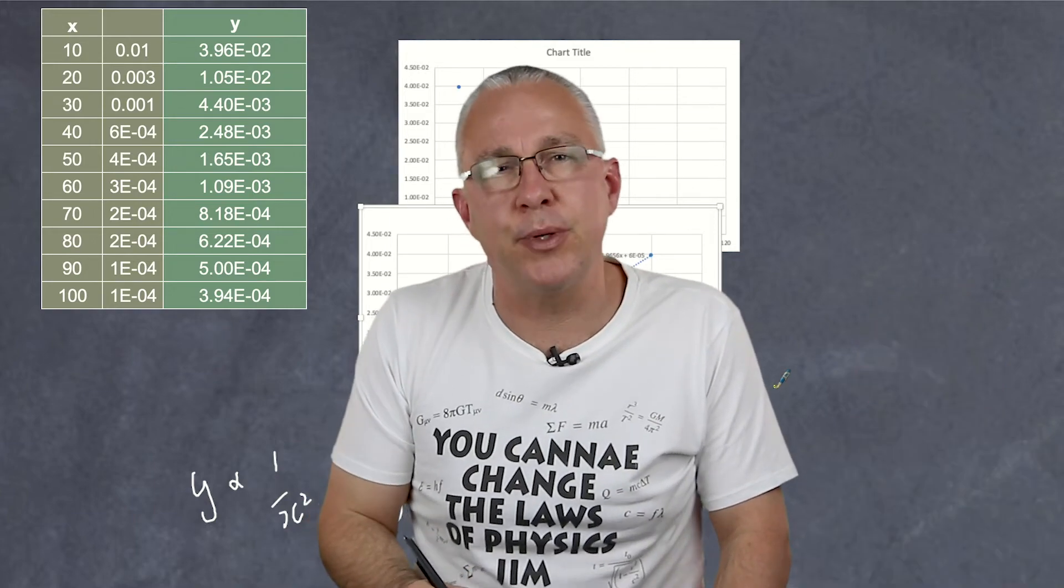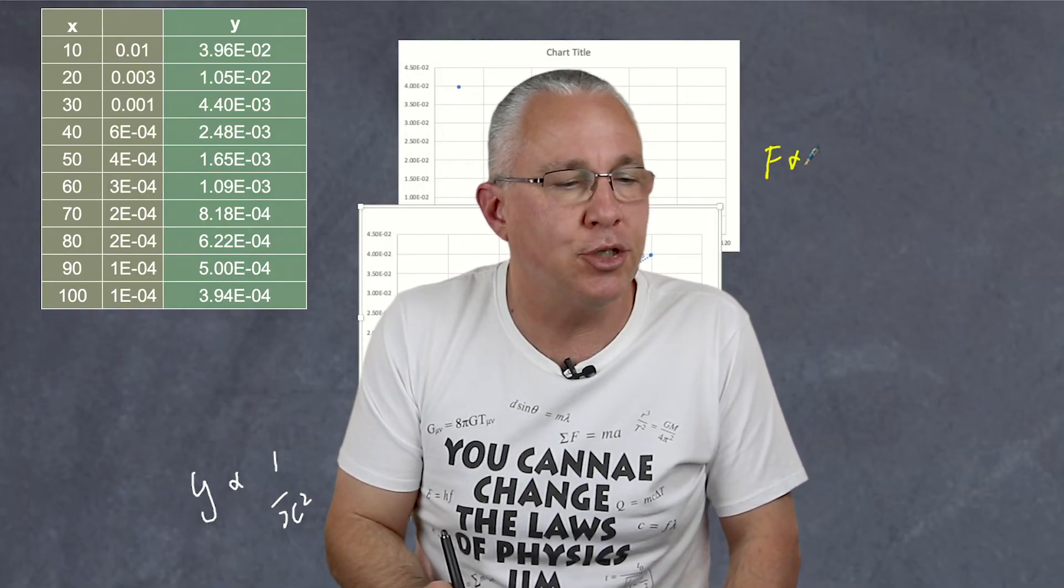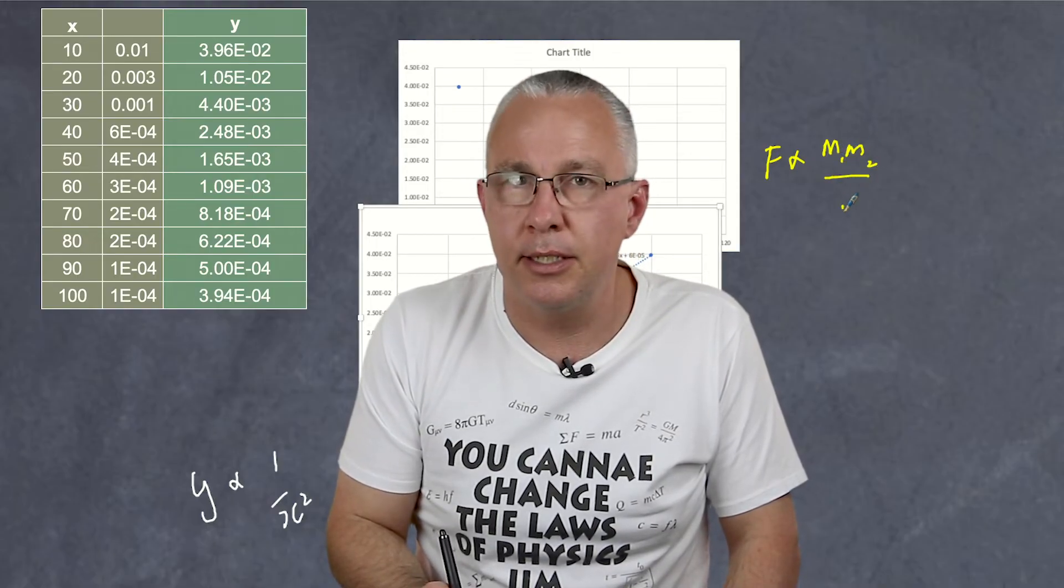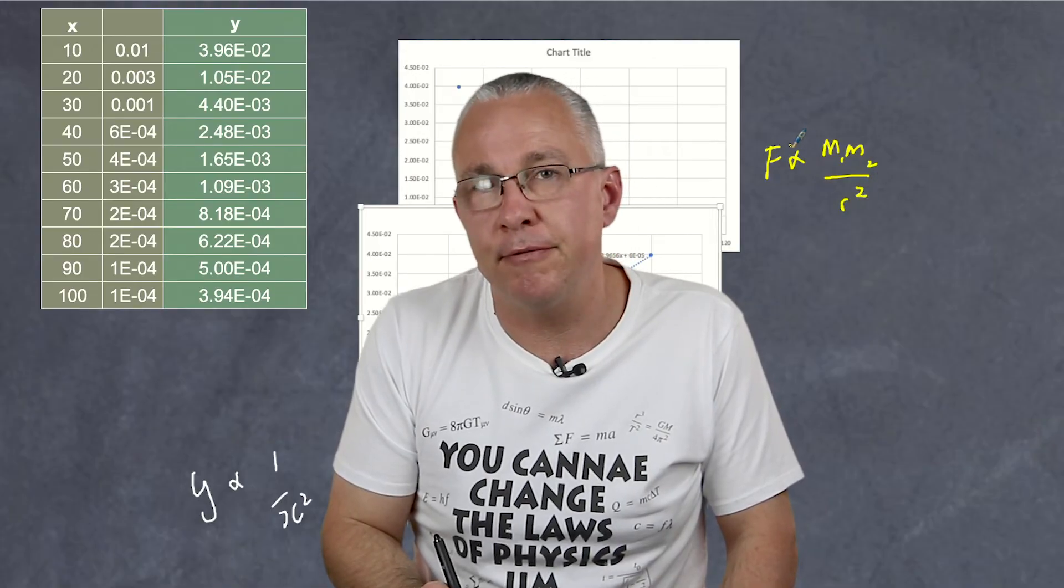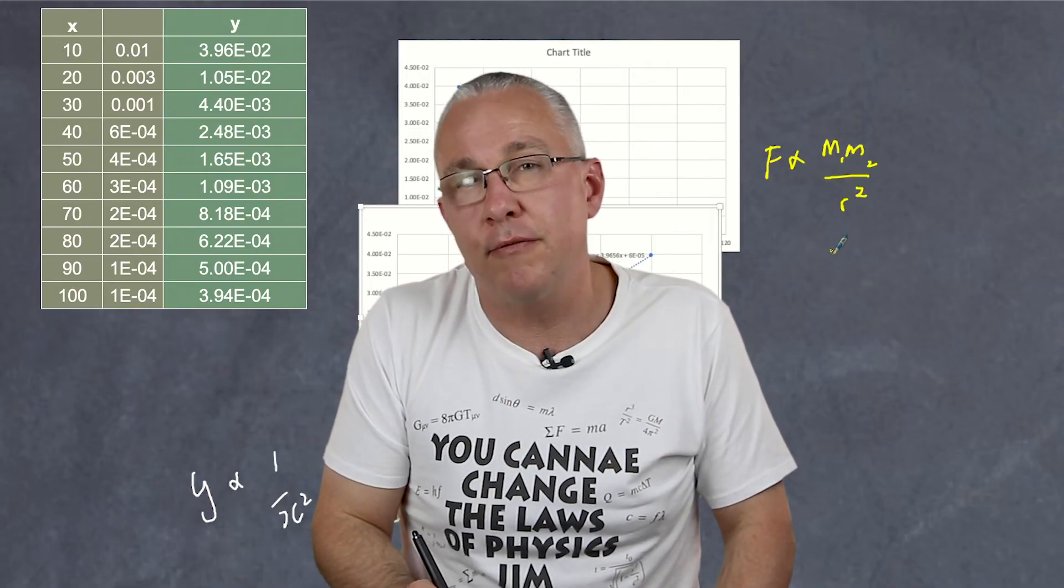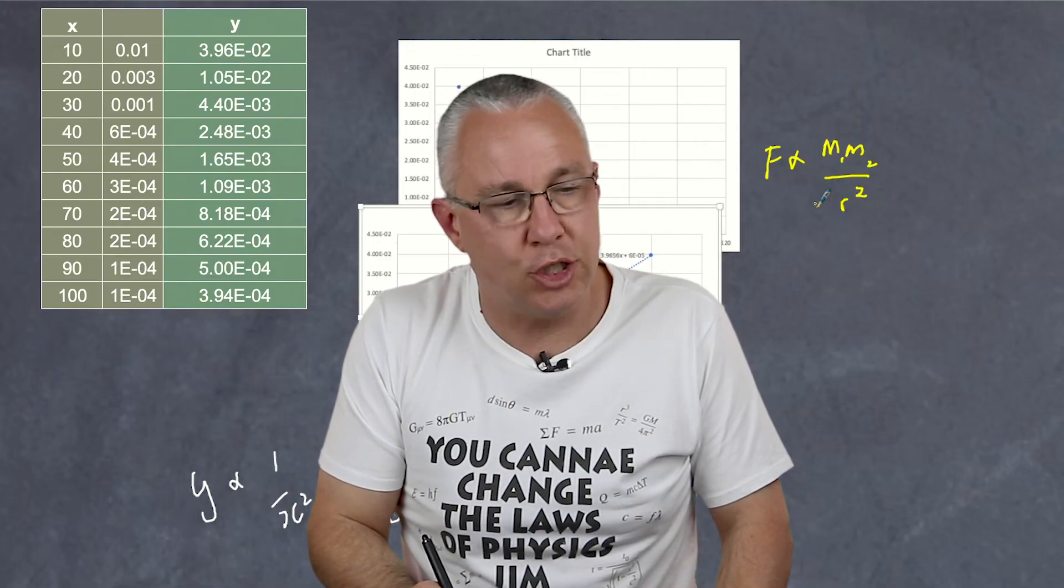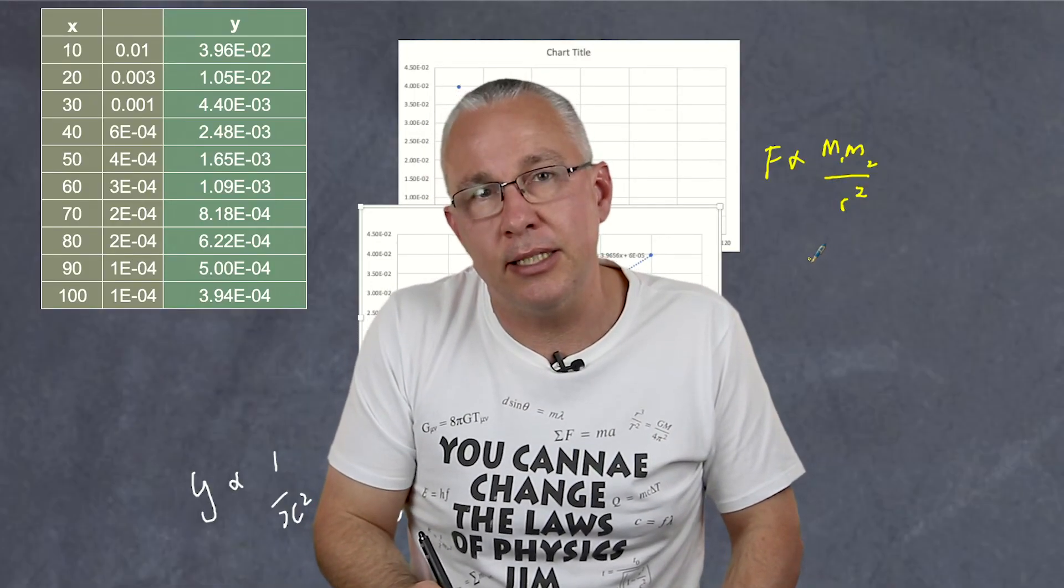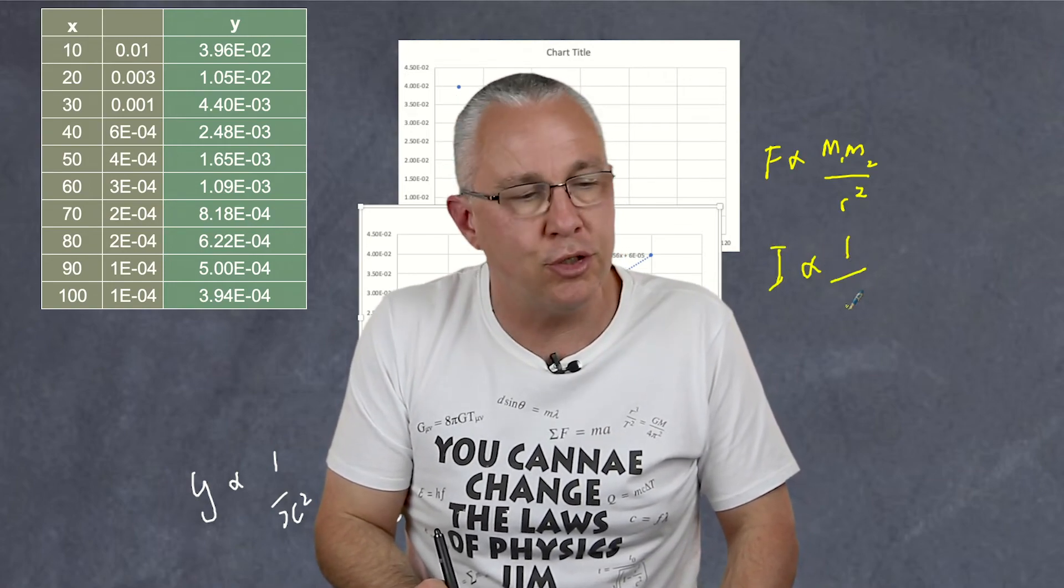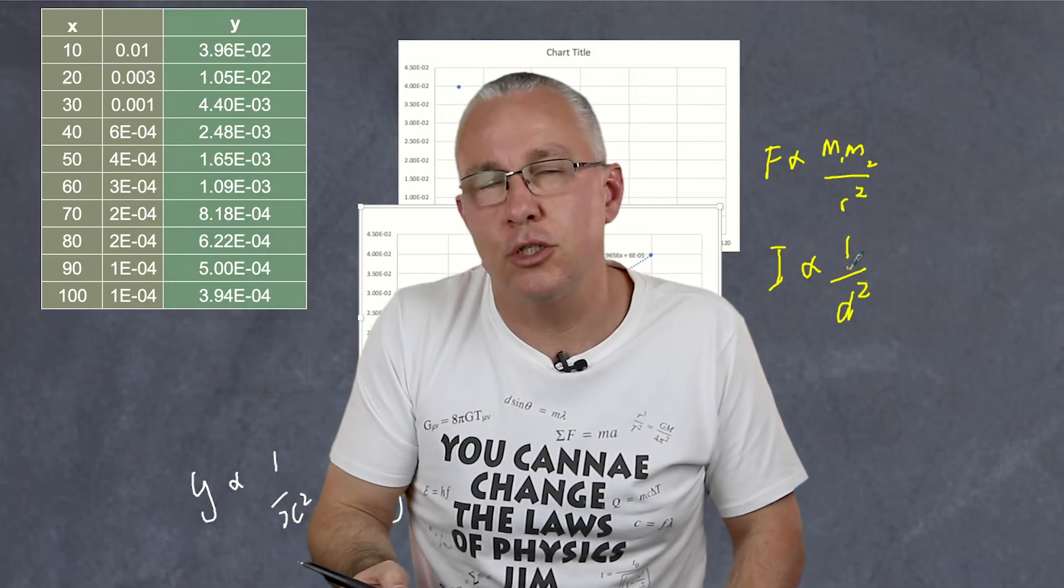So what's our example of an inverse square relationship? Well there's lots. The law of gravitation says that F is proportional to the product of the two masses divided by the distance between them squared. So F the gravitational force is proportional to the inverse of the square of the distance between them. Coulomb's law is practically the same sort of situation. And then there's the intensity versus distance. That is the intensity of a light source is inversely proportional to 1 over the distance squared. So it's an inverse square relationship.